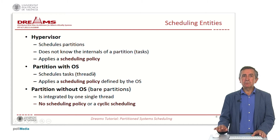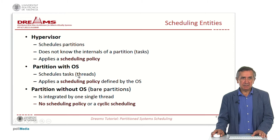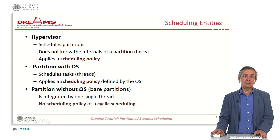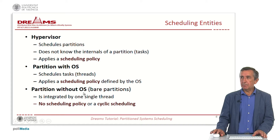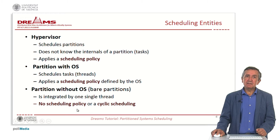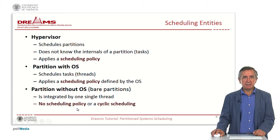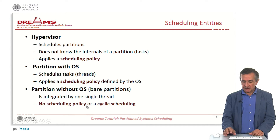The hypervisor applies a scheduling policy to schedule partitions. At the next level, a partition with an OS schedules tasks or threads and applies a scheduling policy defined by the operating system. A partition without an OS consists of only one single thread with no scheduling policy, or in some cases a cyclic scheduling policy may be applied.